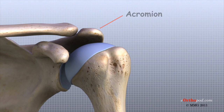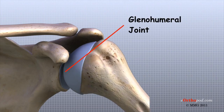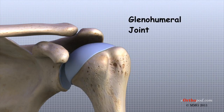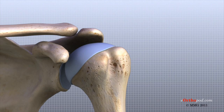There are actually four joints that make up the shoulder. The main shoulder joint, called the glenohumeral joint, is formed where the ball of the humerus fits into a shallow socket on the scapula. This shallow socket is called the glenoid.